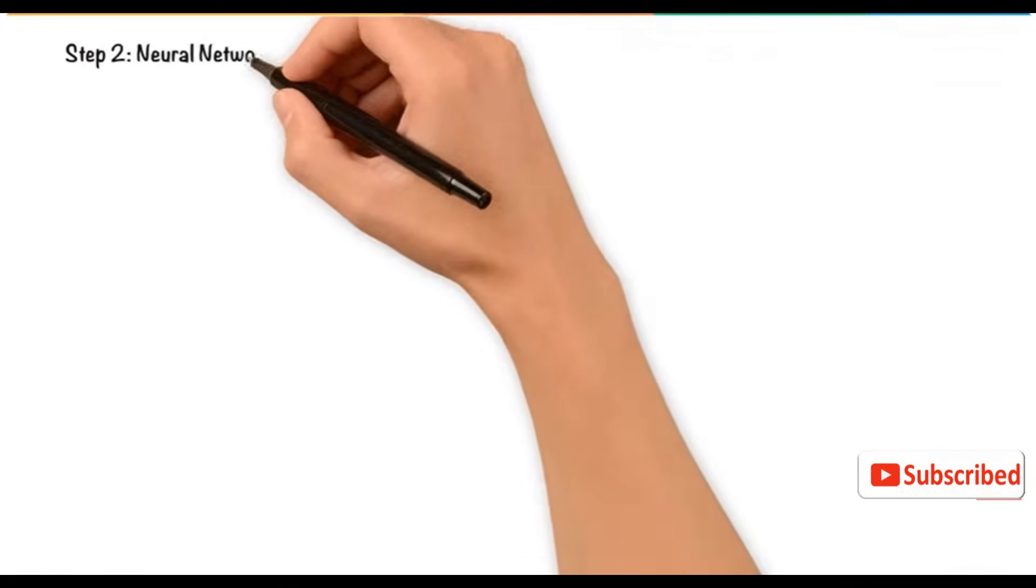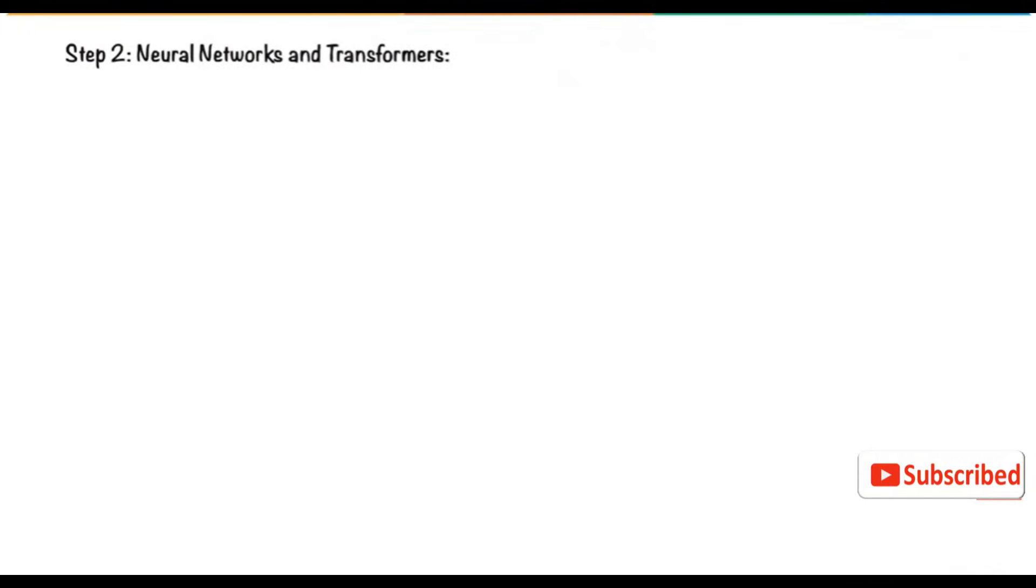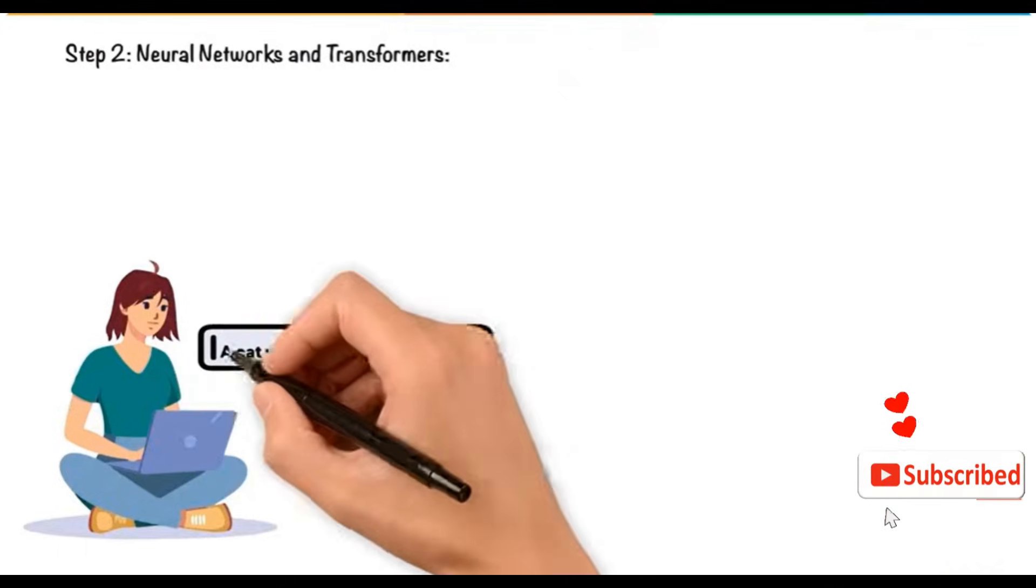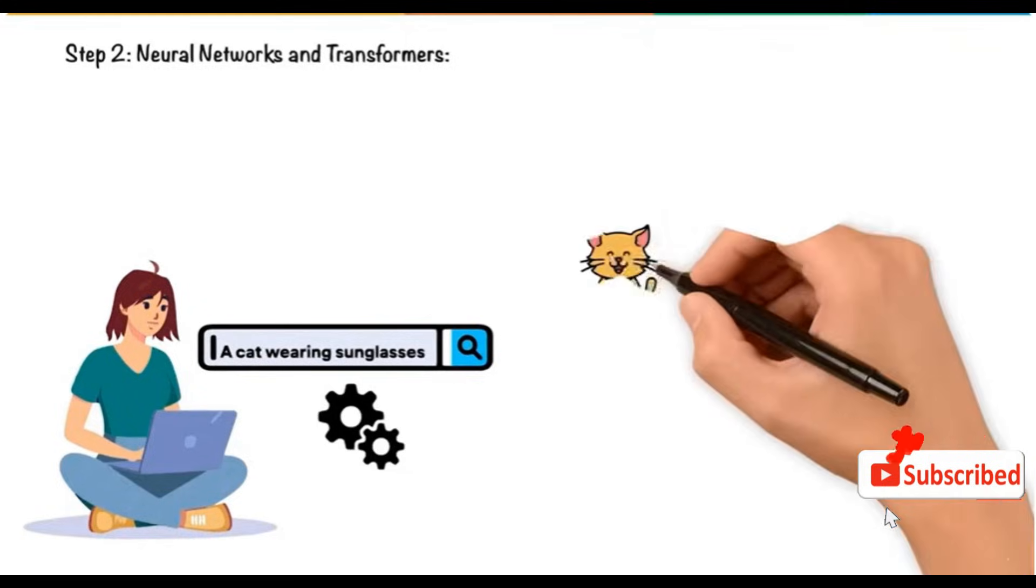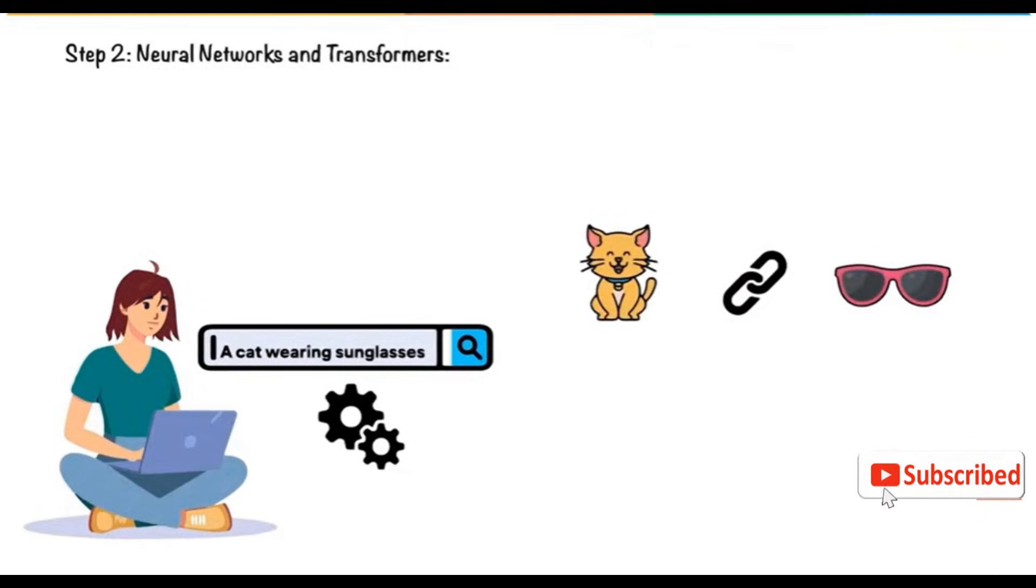Neural Networks and Transformers: When Tina inputs a prompt like a cat wearing sunglasses, the transformer model processes the text, recognizing words like cat and sunglasses and links them to images it learned from during training. Transformers help the AI decide how to combine these elements into a coherent image.